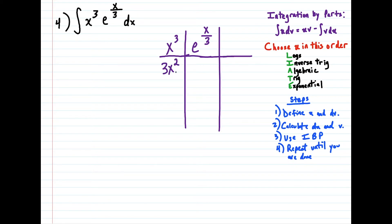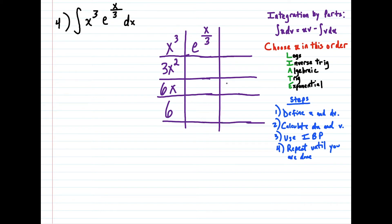So we have 3x² would be our next derivative. Then we're going to have 6x. And then we're going to have 6. Now I could go to the next line, which is zero, but we don't have to do that here. And then in this row it's going to be a little bit trickier. We would do the antiderivative of e^(x/3), and the antiderivative of e^(x/3) is e^(x/3) divided by the derivative of x over 3, which is one third. So dividing by one third gives us a coefficient of 3.